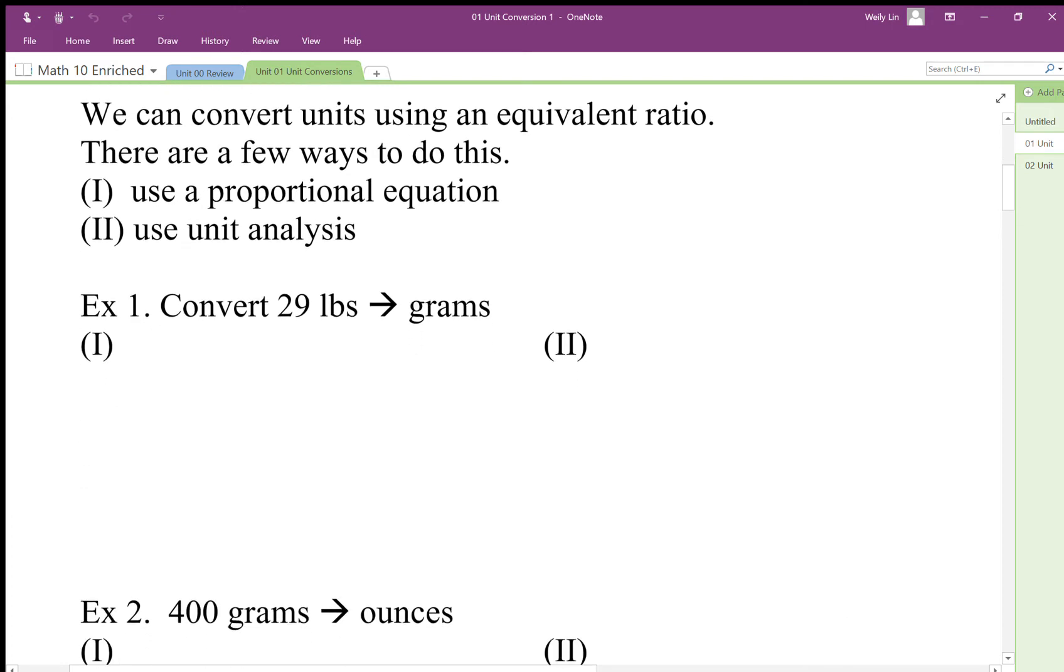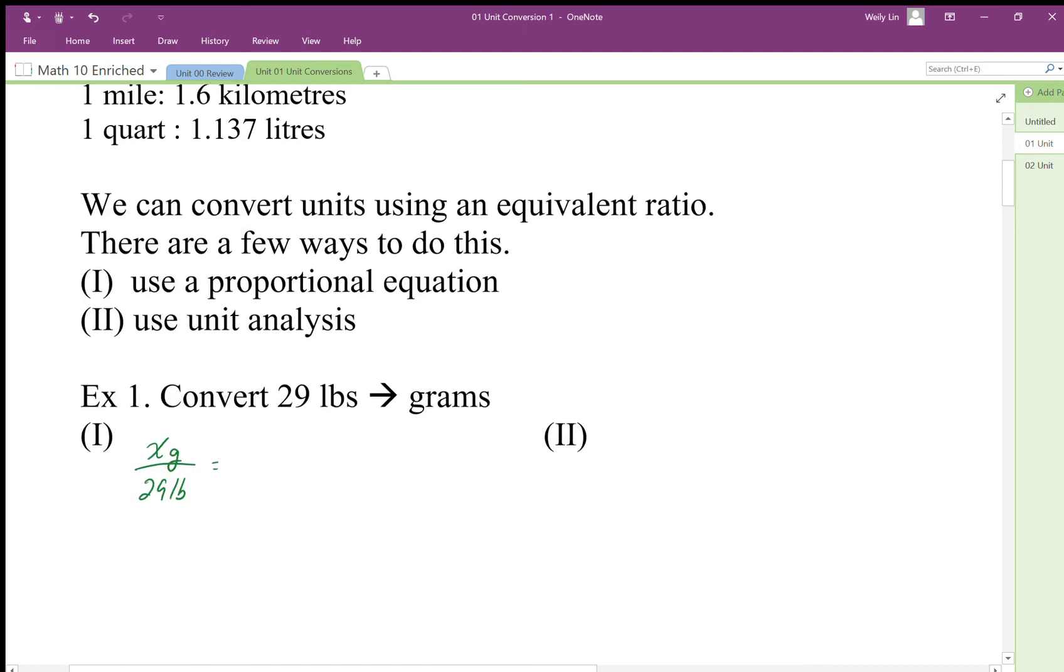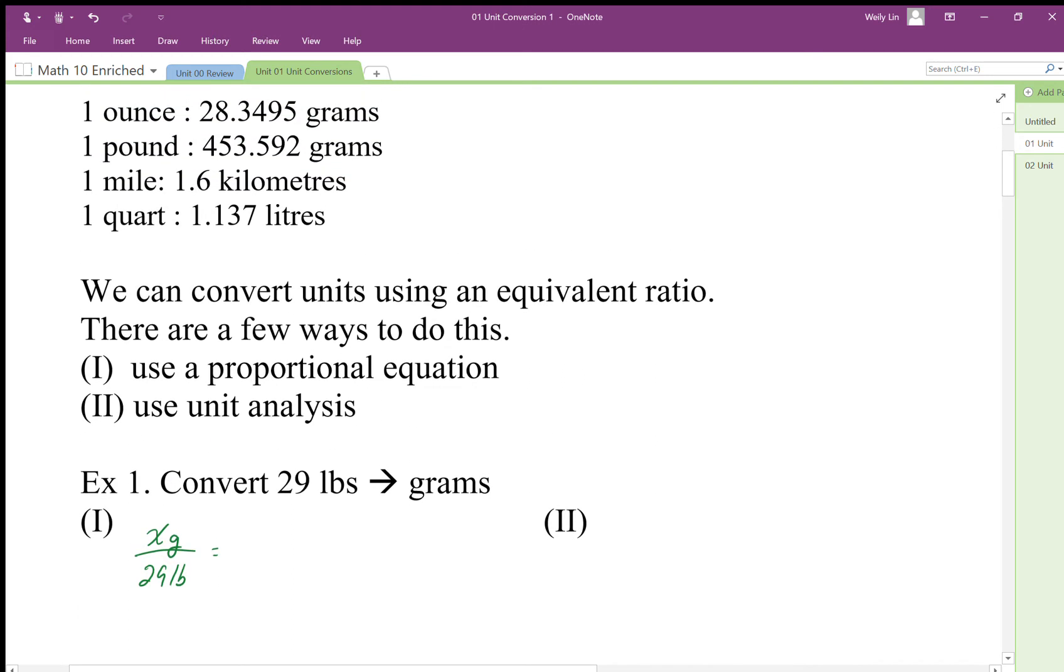One way to do this is using a proportional equation. We want to convert pounds to grams, so we compare some unknown number of grams to 29 pounds and make that equivalent to a proportion that is already set. In this case, we want pounds and grams, so we're going to use 454 grams to one pound.